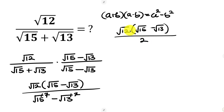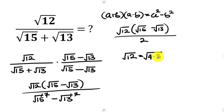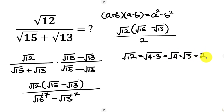Now let's simplify √12. The square root of 12 is the same as the square root of 4 times 3. 4 times 3 is 12, which can further be simplified into the square root of 4 times the square root of 3. So the square root of 12 is 2 root 3.